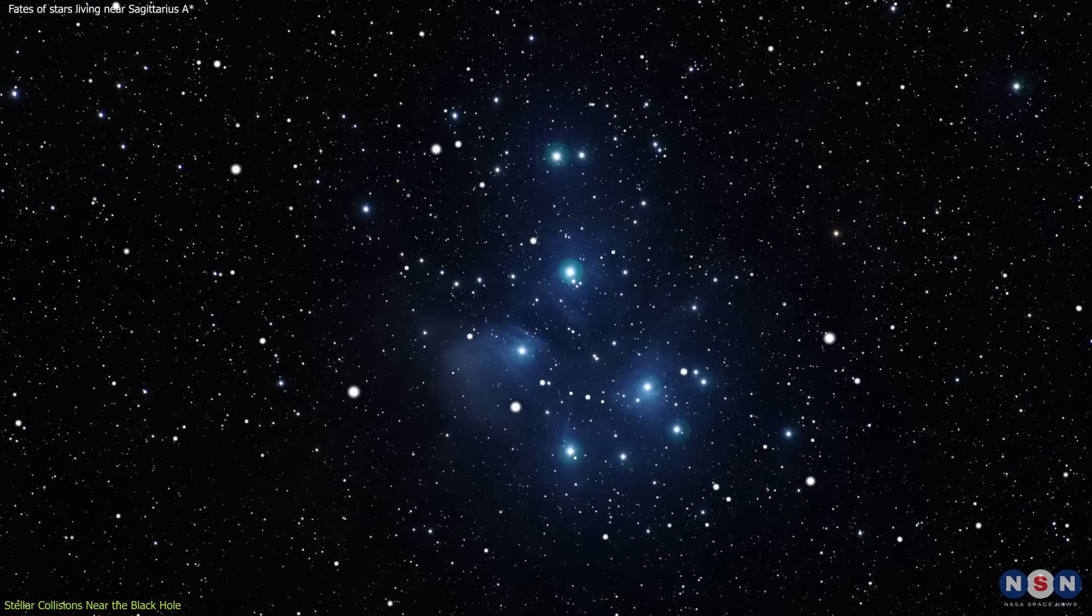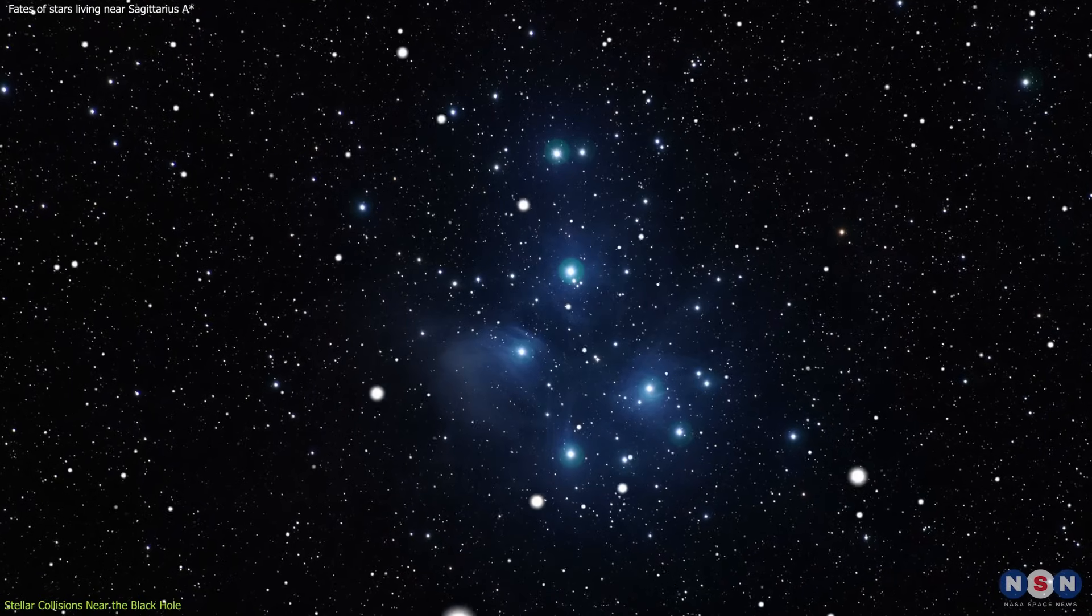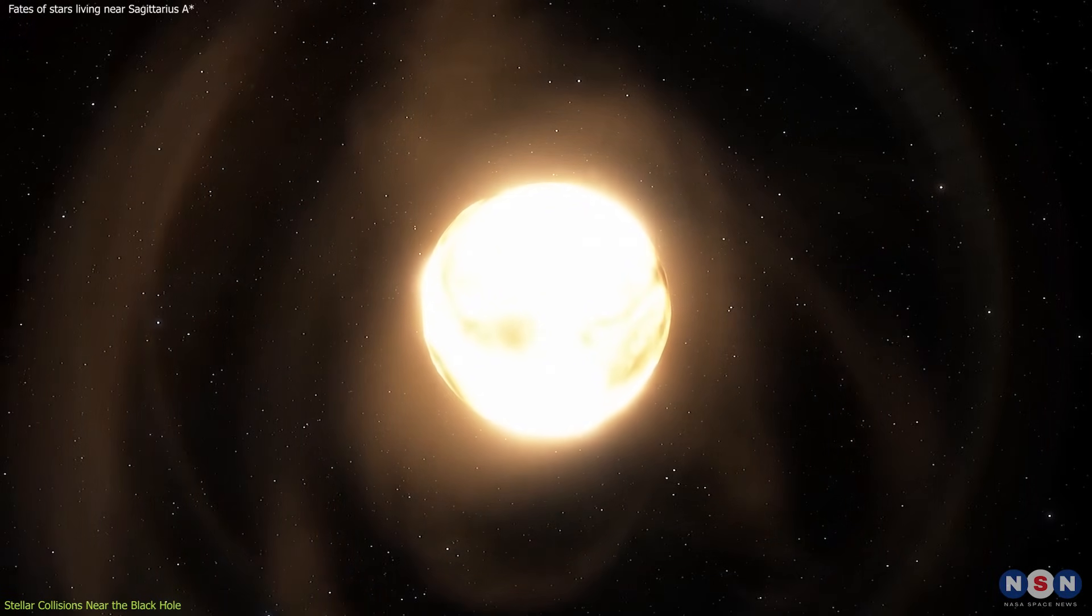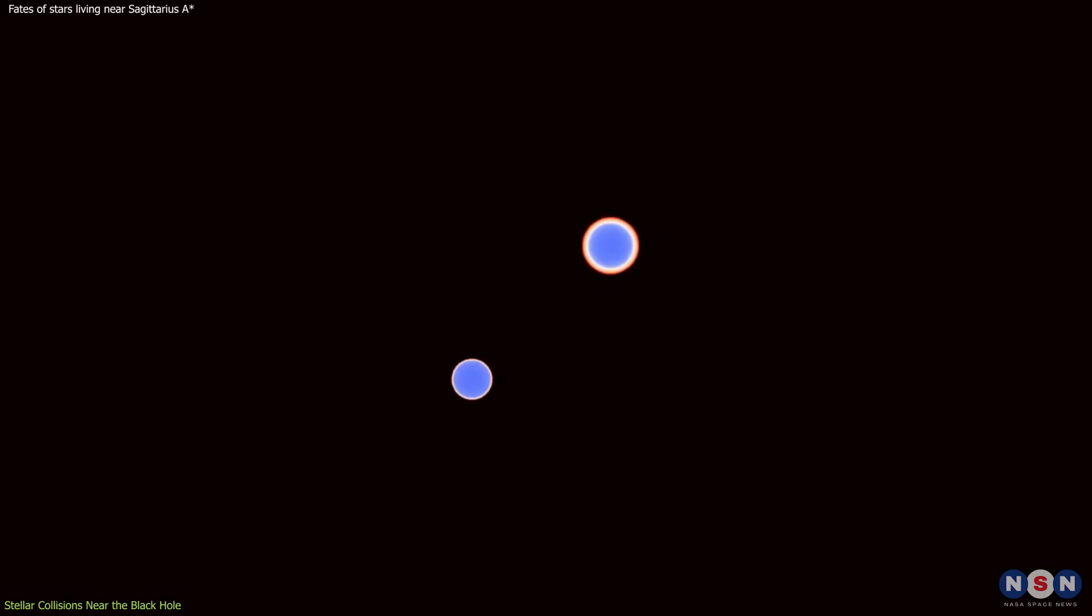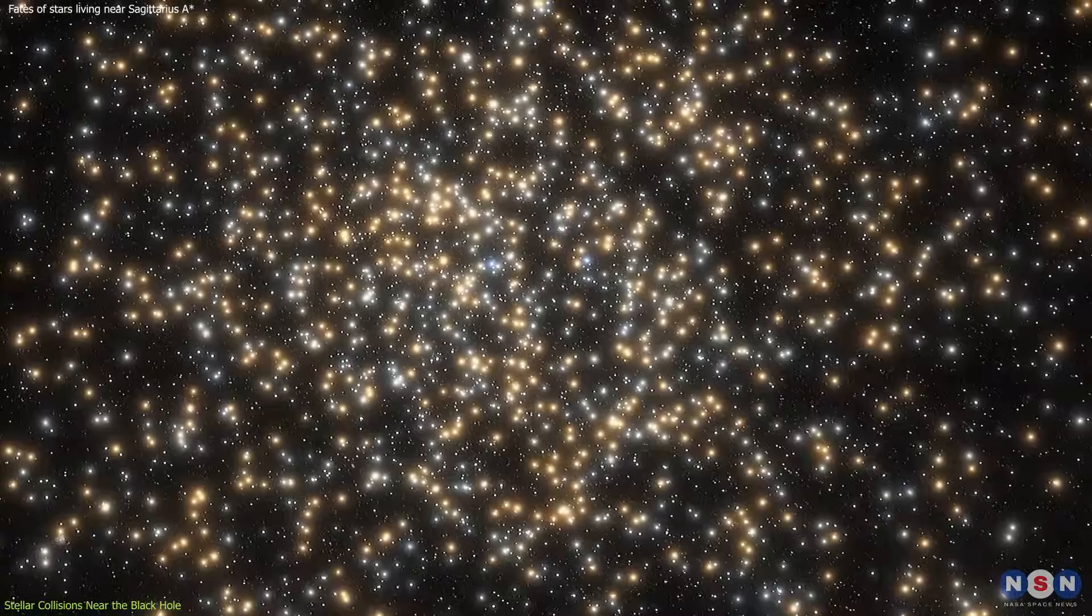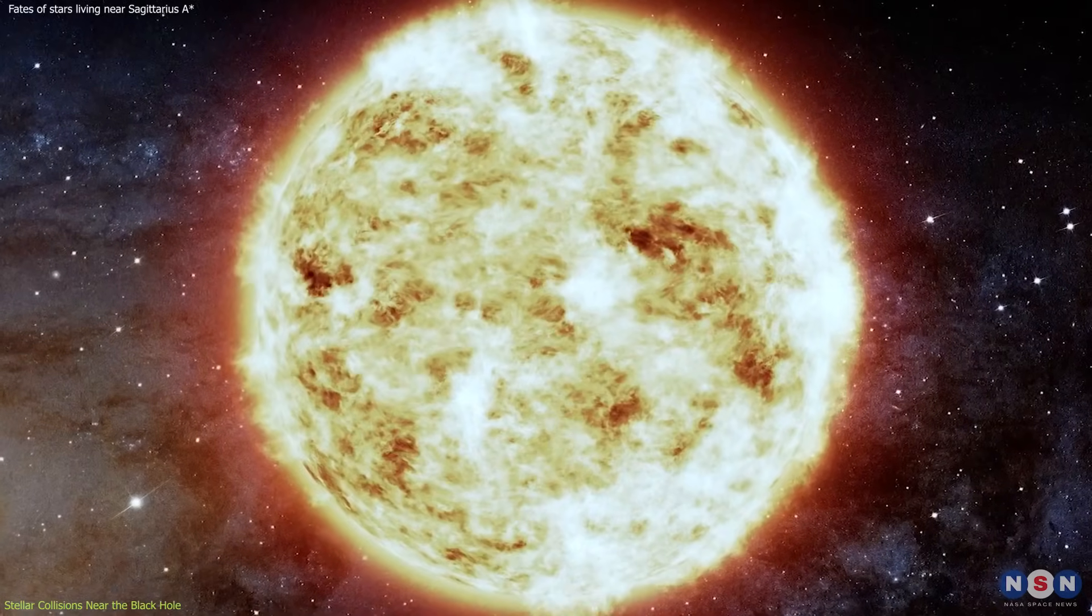The aftermath of these collisions is a population of stars that have been stripped of their outer layers, revealing their low-mass cores. These stripped-down stars are a peculiar sight, as they retain their luminosity despite their reduced mass. The frequent collisions and interactions in this region contribute to a dynamically evolving stellar population, where the traditional rules of stellar evolution are bent under extreme conditions.